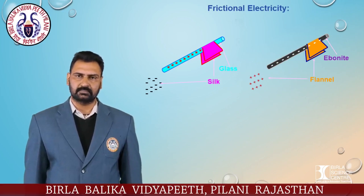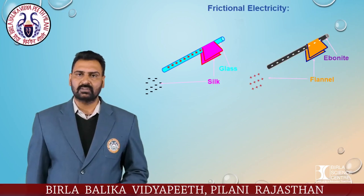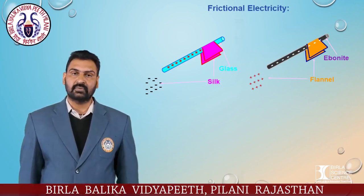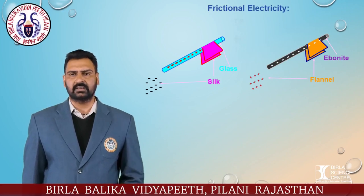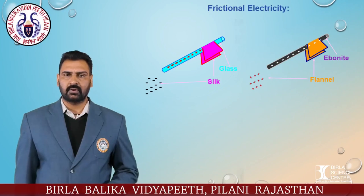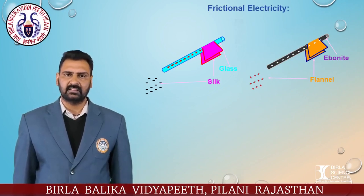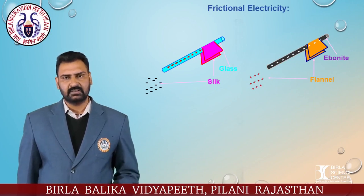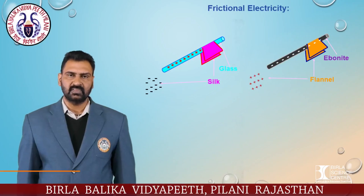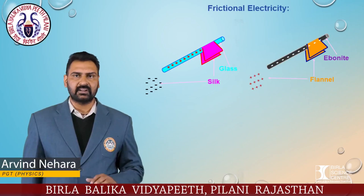Electrons in fur are loosely bound compared to electrons in ebonite. So when ebonite and fur are rubbed together, the comparatively loosely bound electrons from fur get transferred to ebonite. As a result, ebonite becomes negatively charged and fur becomes positively charged.